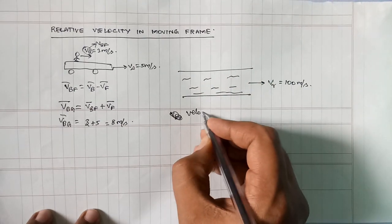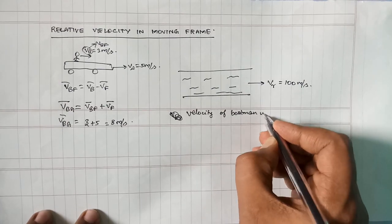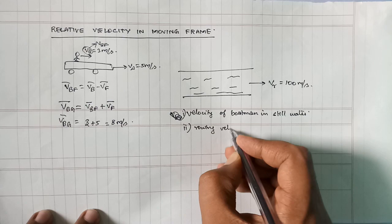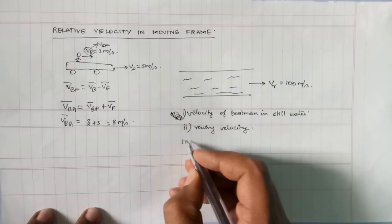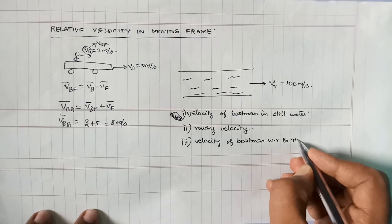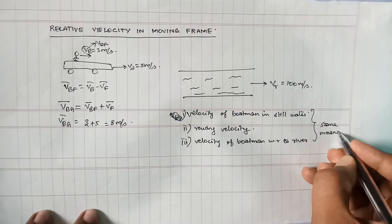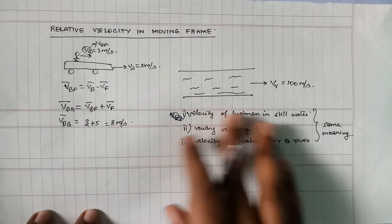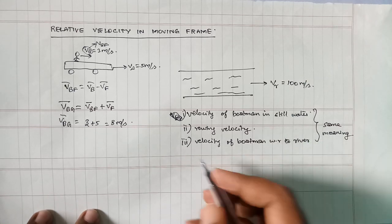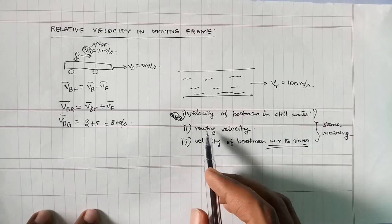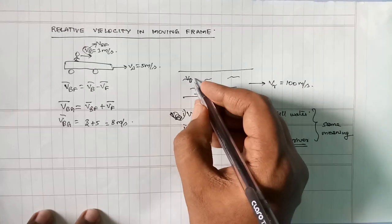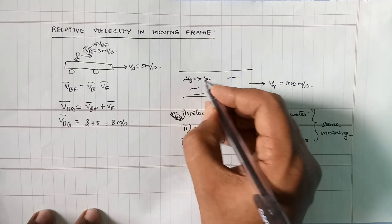The velocity of the boatman with respect to the river — this is the rowing velocity. If you are confused, suppose the velocity of the boatman in still water is the same as the velocity of the boatman with respect to the river. That is the rowing velocity, which is about 5 meters per second.